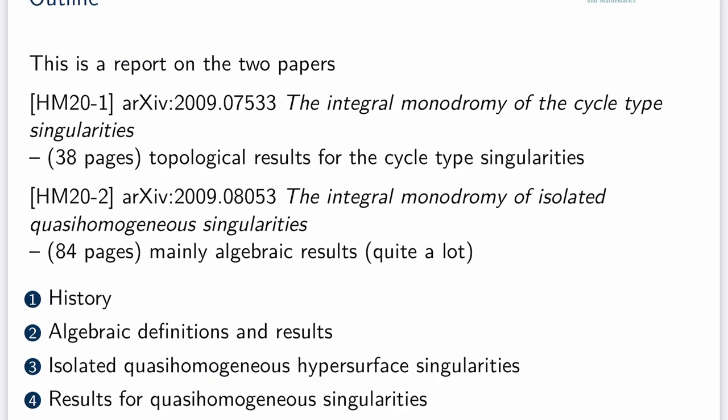I will report on two papers which we put in September this year on the archive. The first has 38 pages and contains topological results on the cycle-type singularities, with the title 'The Integral Monodromy of the Cycle-Type Singularities.' The second paper has 84 pages and is on the integral monodromy of all isolated quasi-homogeneous singularities, containing mainly algebraic results which at the end are applied to the singularities.